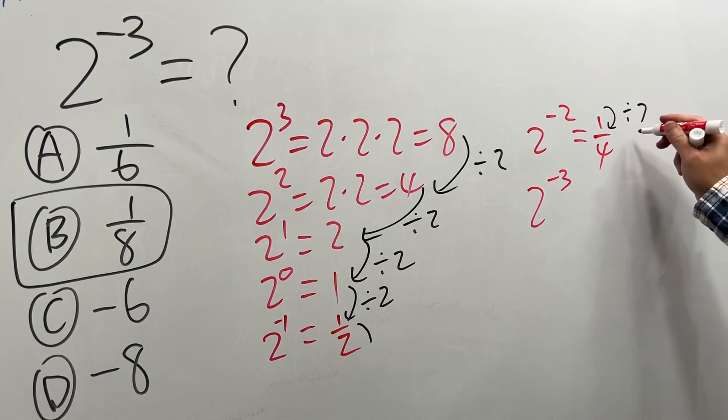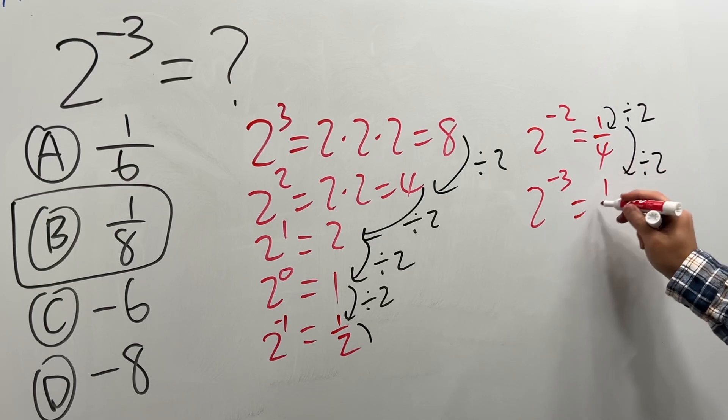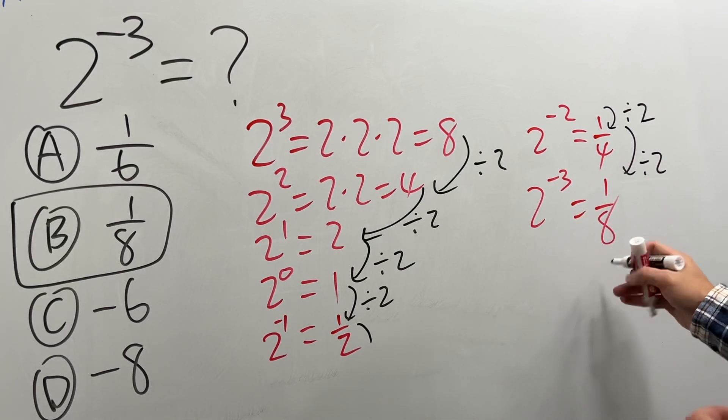And lastly, 2 to the negative 3. Divide this right here by 2. You will end up with 1 over 8. So that's the answer.